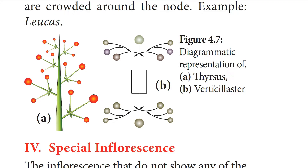Next we have mixed inflorescence, in which both the racemose and cymose patterns are combined. It is of two types: thyrsus and verticillaster. Thyrsus is a raceme of cymes — the indefinite central axis bears lateral pedicellate cymes. Each cyme has an older flower at the top and younger flowers at the sides. Many cymes are borne on the indefinite central axis in a racemose manner. Example: Ocimum.